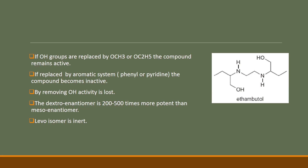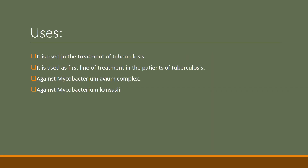The dextro enantiomer is 200 to 500 times more potent than the meso enantiomer. Potency is related to the quantity required, whereas activity is related to pharmacological effect. Taking the dextro form into consideration, it is 200 to 500 times more potent than the meso enantiomer, and the levo isomer is inert.